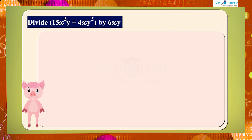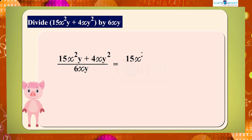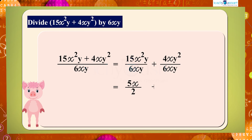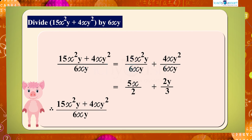Or we can do it in another method: 15x squared y plus 4xy squared, whole divided by 6xy, equals 15x squared y divided by 6xy plus 4xy squared divided by 6xy, which equals 5x by 2 plus 2y by 3. Therefore, 15x squared y plus 4xy squared divided by 6xy equals 5x by 2 plus 2y by 3.